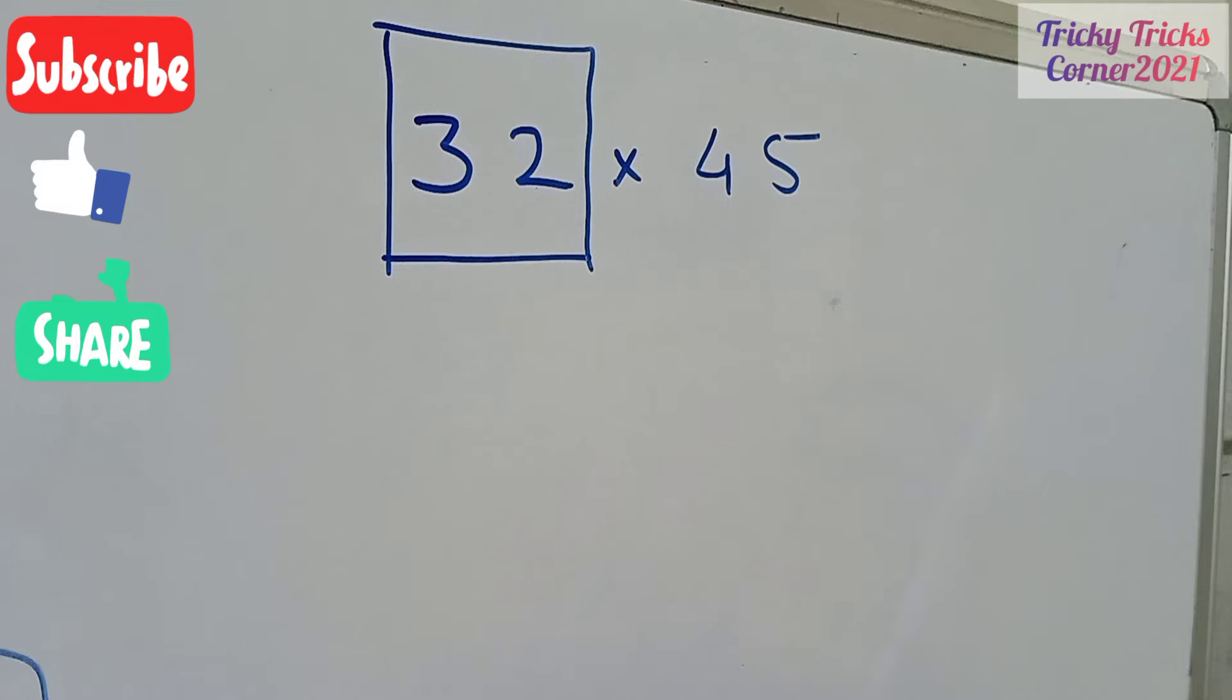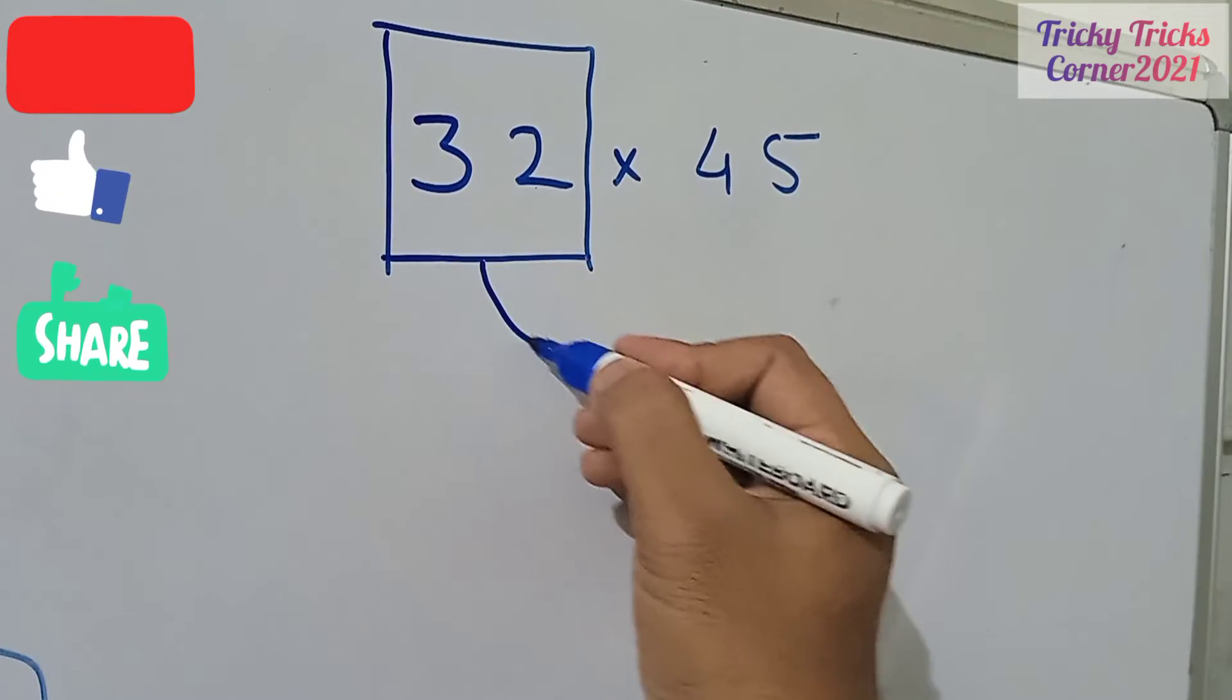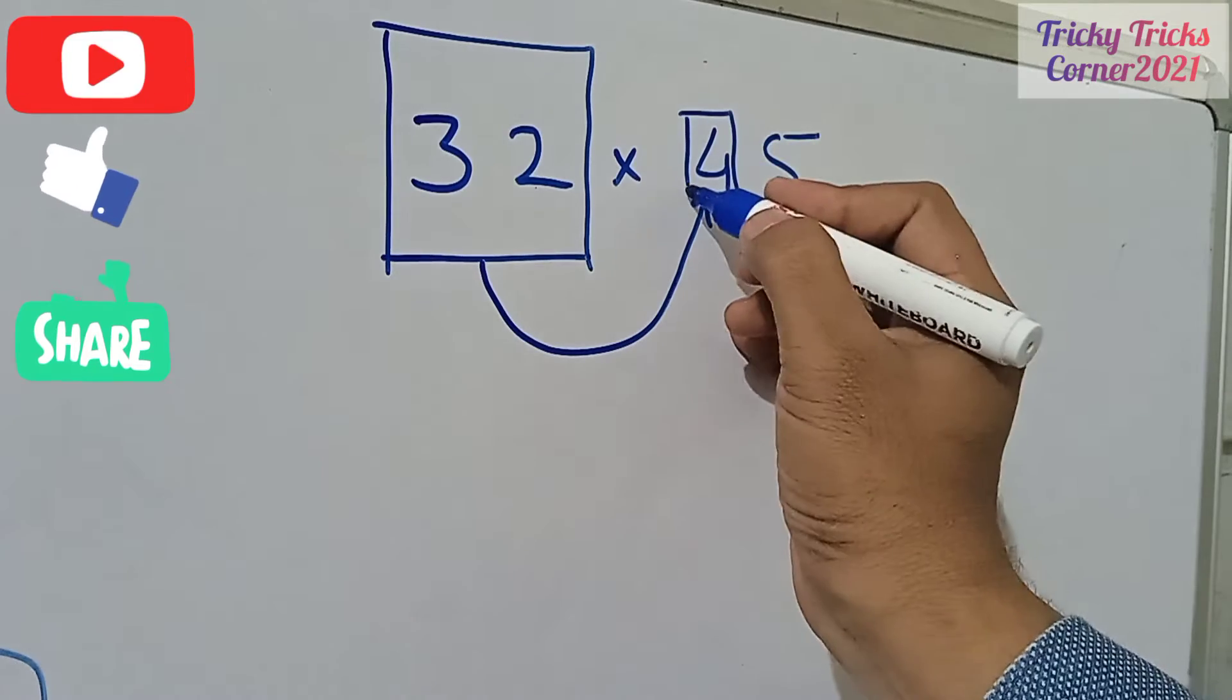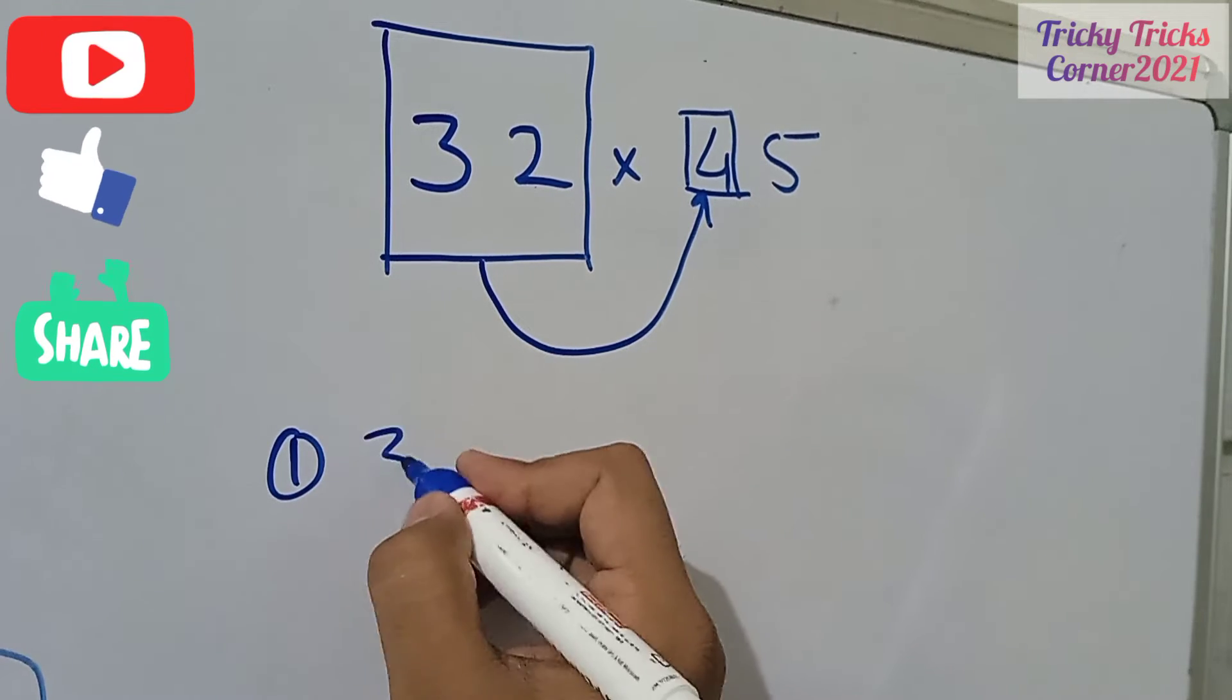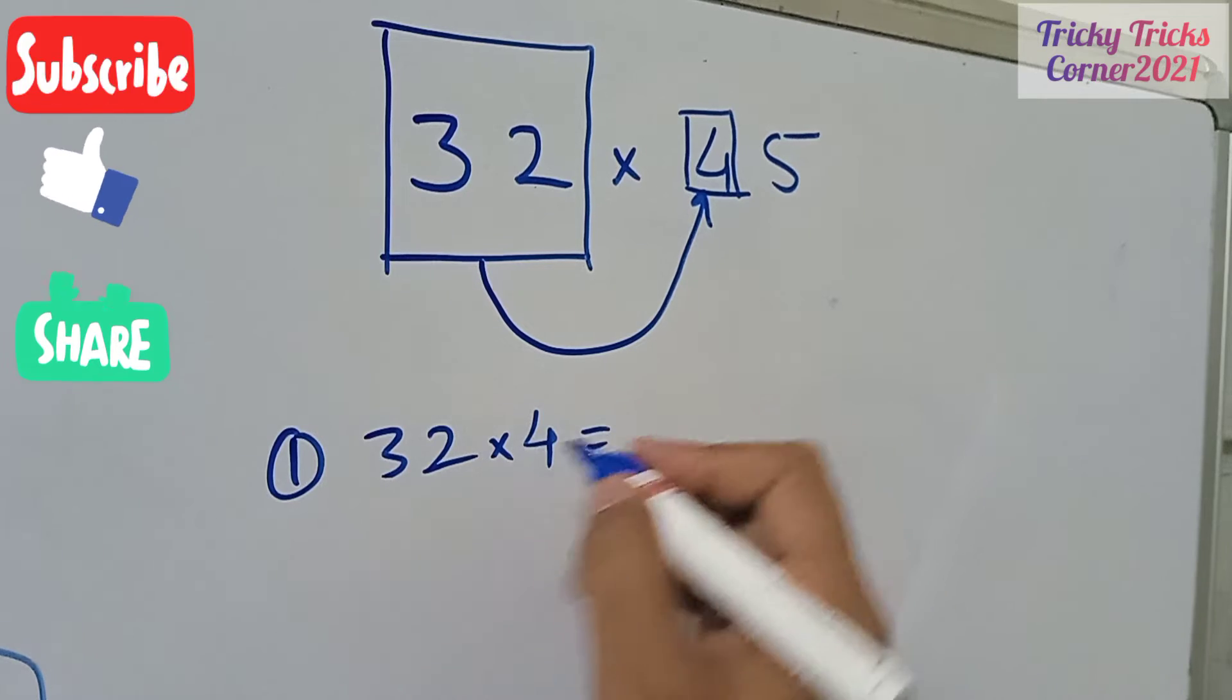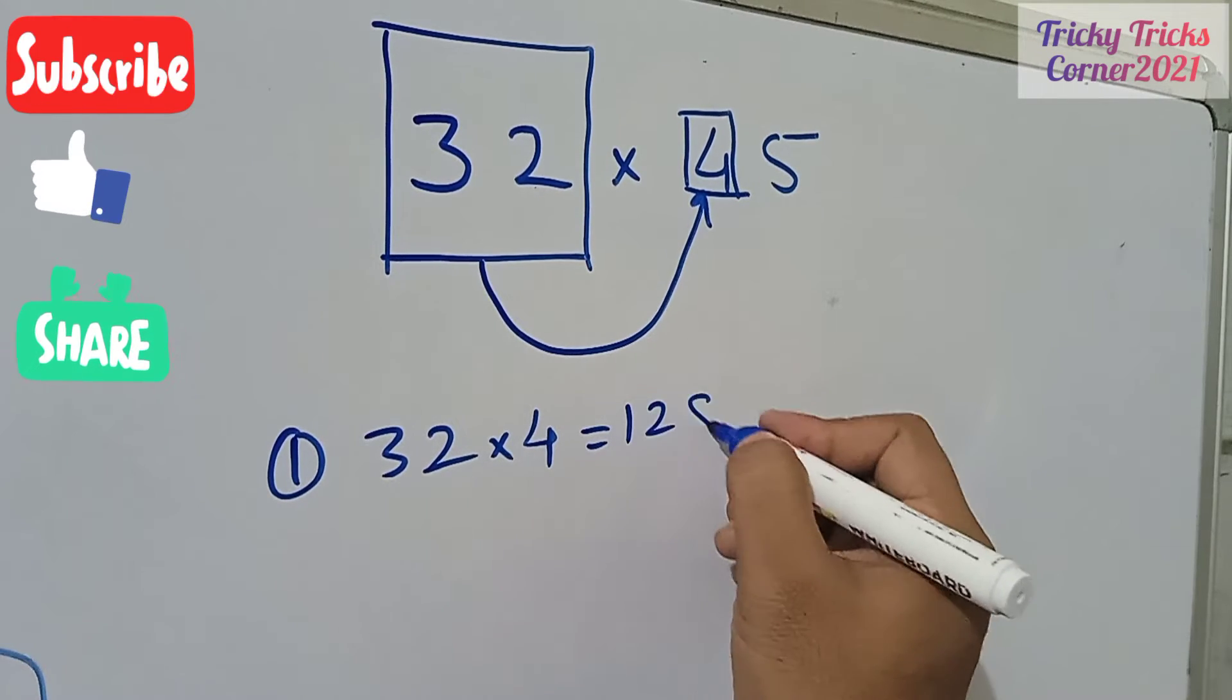Draw one square, have this particular number with the multiplication of this number. Write down over here, the first step I would say: 32 multiplied by 4, it will give you 128.